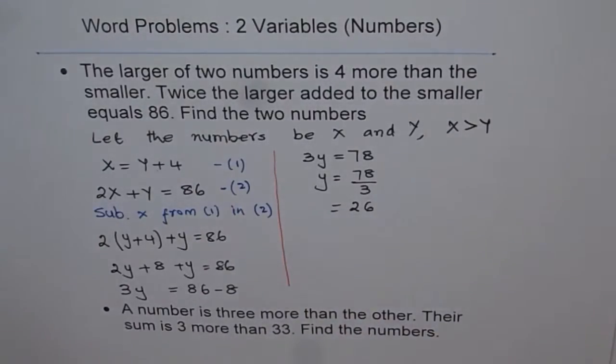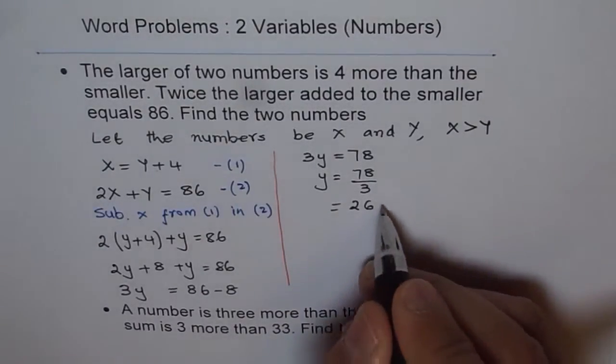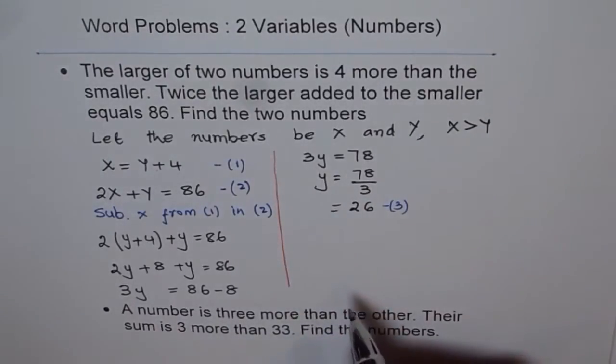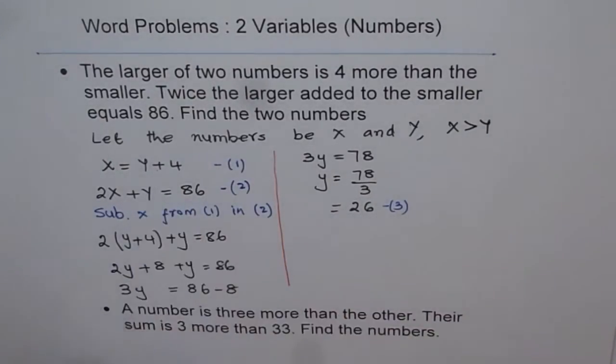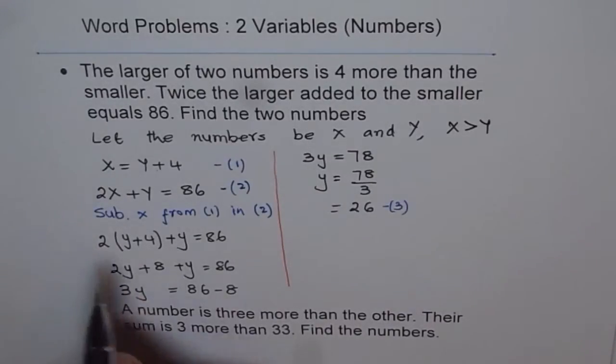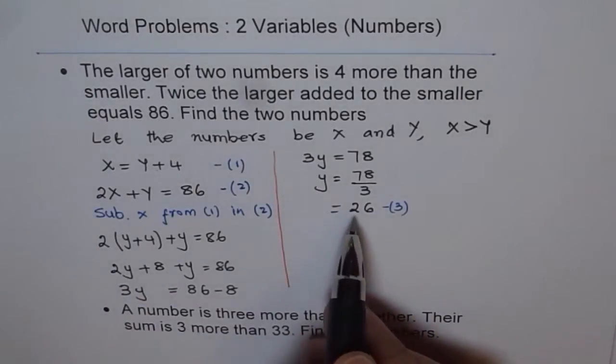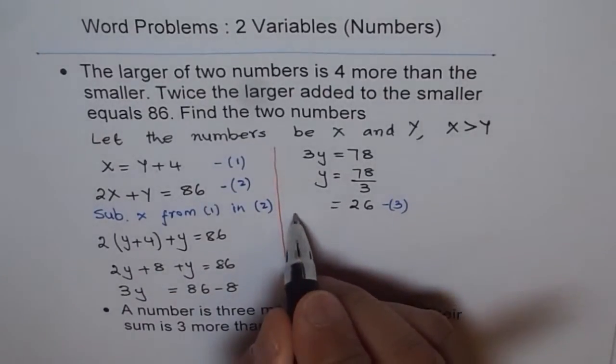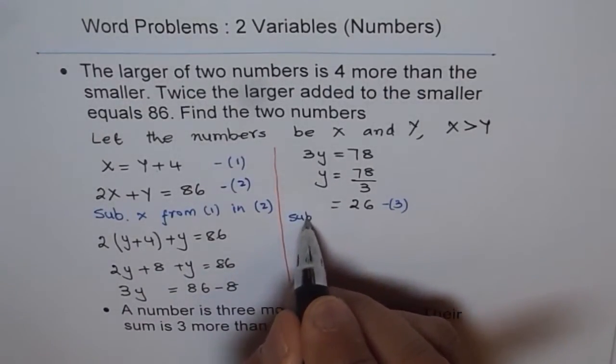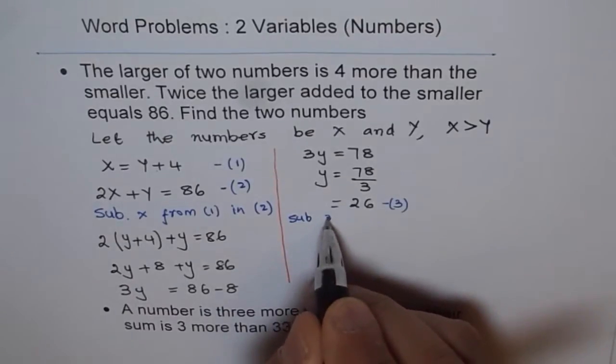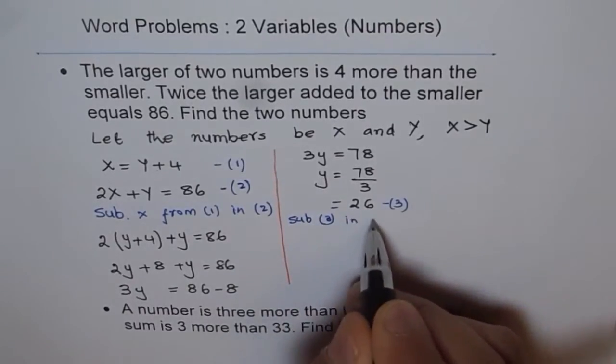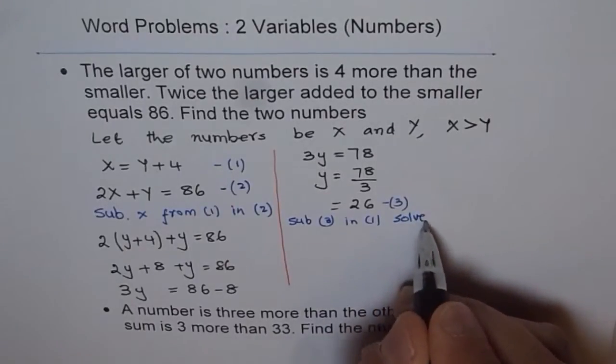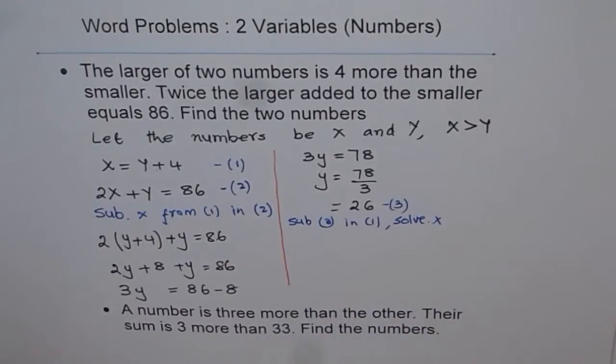So that will be our equation number 3. And in equation 3, we found value of one variable. To find the value of the other variable, which is x, we can substitute y as 26 in equation 1 and solve. So we will substitute y value from 3 in 1 and then solve for x.